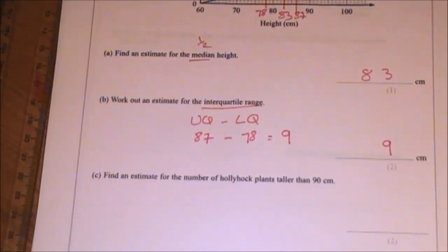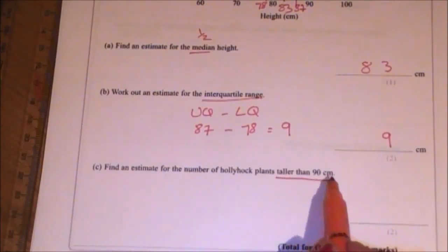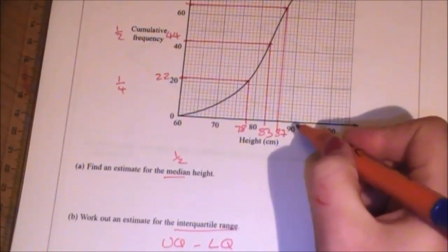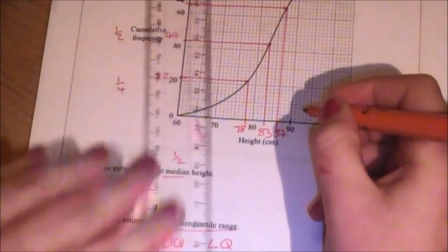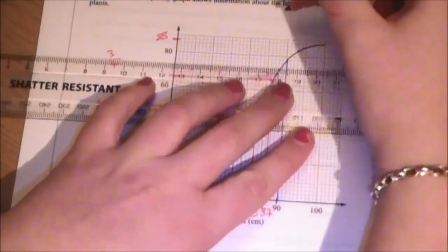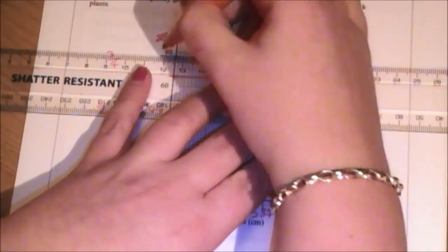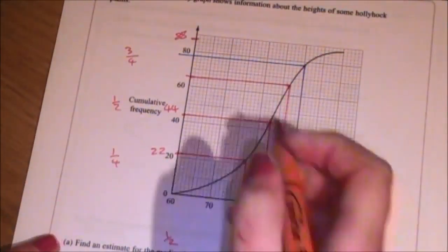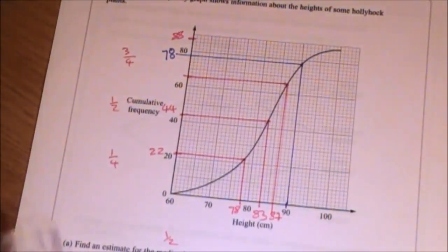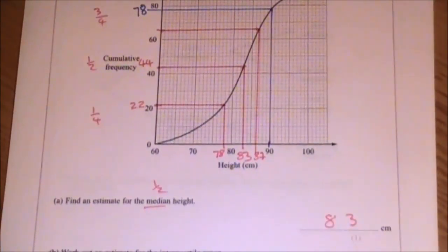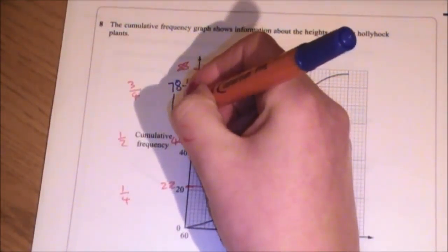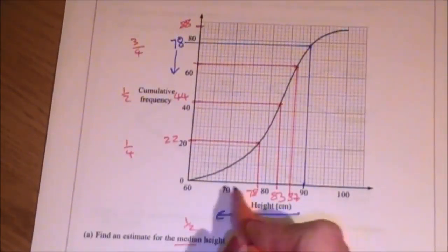Now, for part C, they want you to find an estimate for the number of hollyhock plants taller than 90 centimeters. So this time, I need to look for the 90 centimeter part. That's there. And I'm interested in reading up here and across. And what that gives me is 78 people. So 78 plants. However, 78 is not my answer. Because this is telling me there are 78 plants smaller than 90.